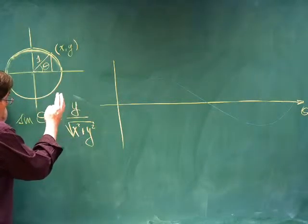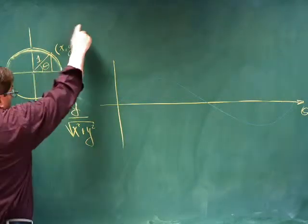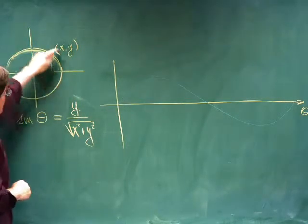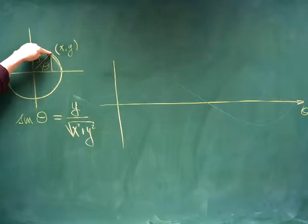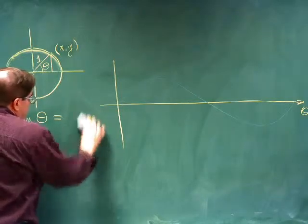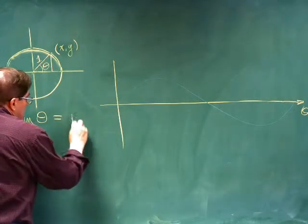If we restrict that even more and say let's make sure that the point on the terminal side is on this unit circle, then x squared plus y squared is going to be equal to 1. So, restricting ourselves to that unit circle, the sine of theta simply becomes the y.